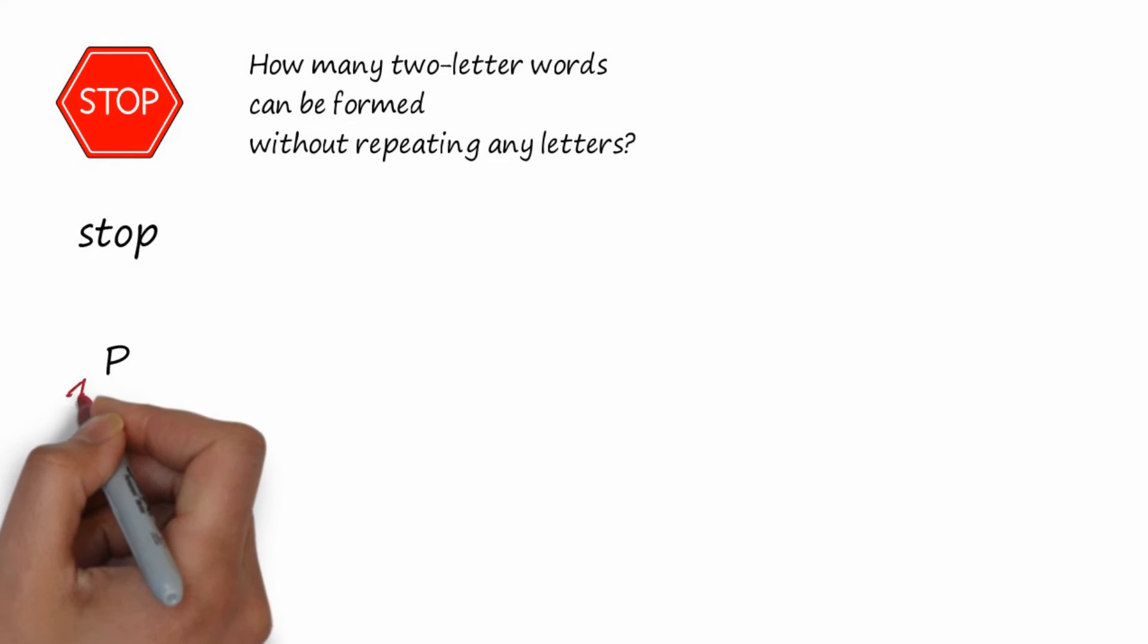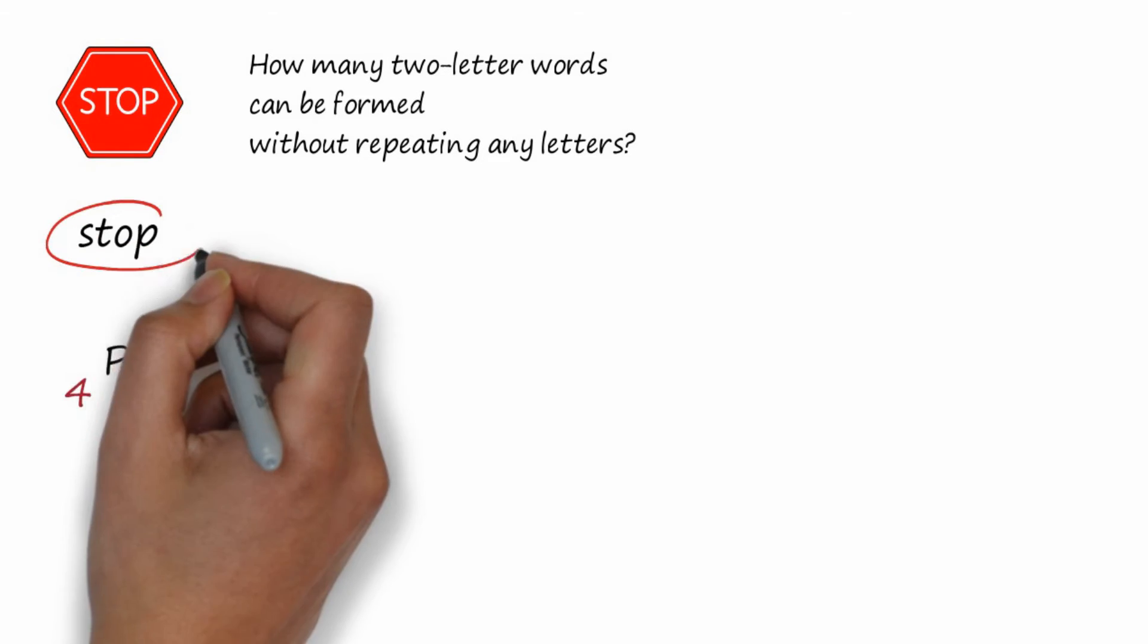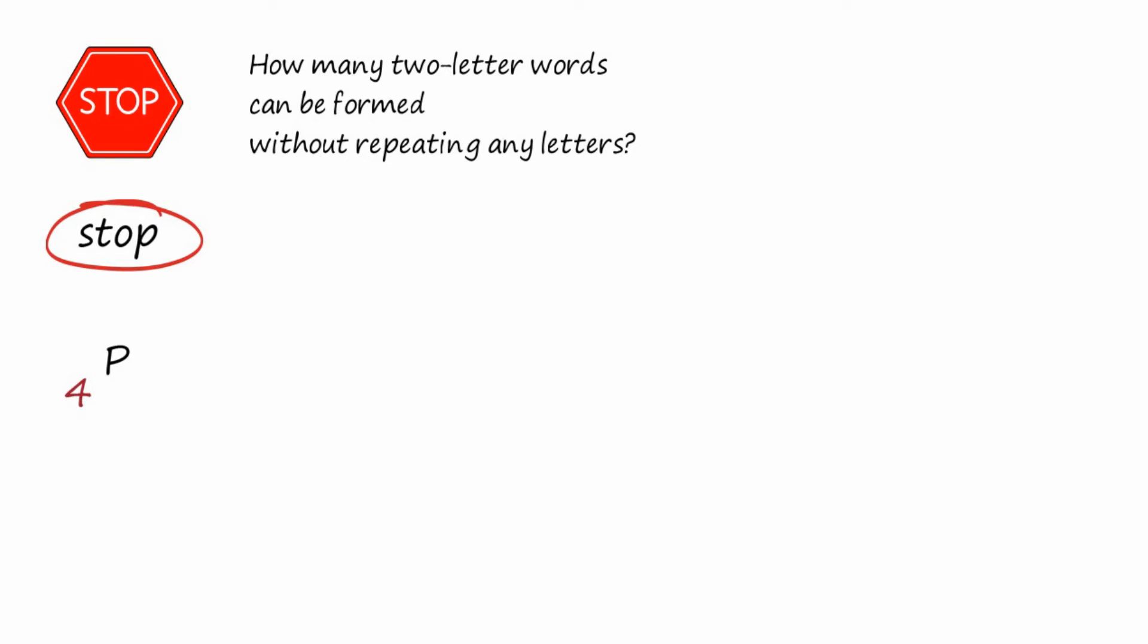The permutation of four things, four letters in the word stop, taken two at a time, because we want to form two-letter words in this case. That would be the permutation of four things taken two at a time, 4P2.